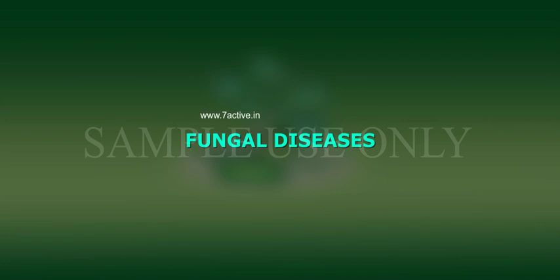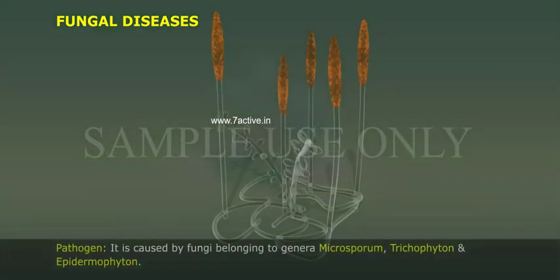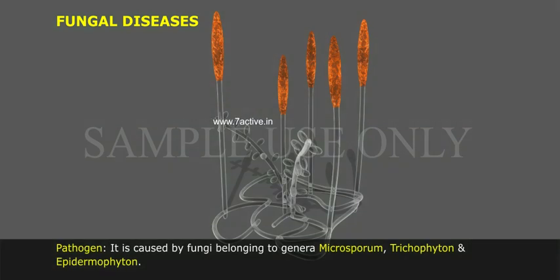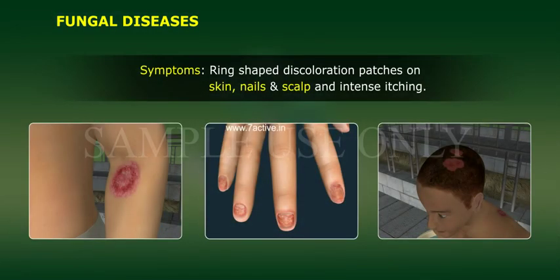Fungal Diseases. 1. Ringworm. Ringworm is a contagious disease of the skin, hair, and nails. Pathogen: it is caused by fungi belonging to the genera Microsporum, Trichophyton, and Epidermophyton. Symptoms: ring-shaped discoloration and patches on skin, nails, and scalp.